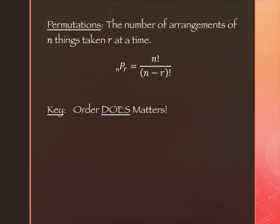Permutations is the number of arrangements of n things taken r at a time. Factorials show up in the formula. The notation is nPr, where on top it's n factorial and on the bottom it's (n minus r) factorial. We saw this formula in play in previous sections — something like 20 factorial divided by 10 factorial — but understanding what it's finding for us is new.